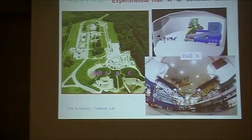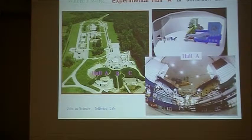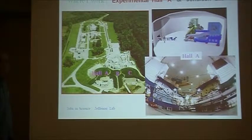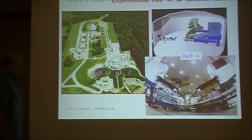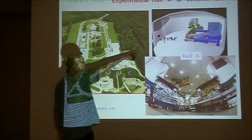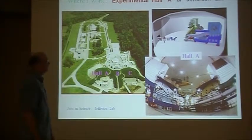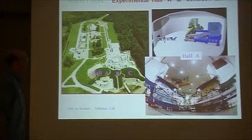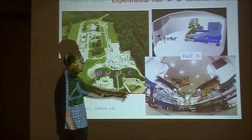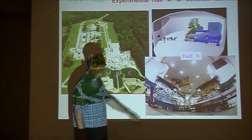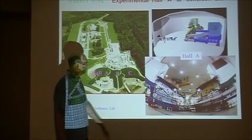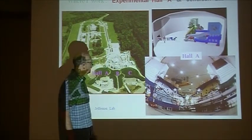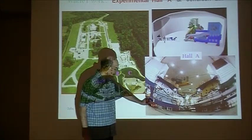So I work in experimental Hall A. This is another aerial view of the accelerator complex at Jefferson Lab, and it has these three halls A, B, and C. Over here on the top right is an artist's view of Hall A with the equipment in it, which I'll explain a little bit more. And then this is a fisheye photograph of that equipment. It's a little hard to see how big it is but a person would be about that big.